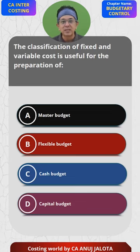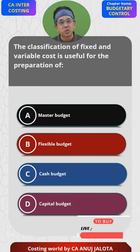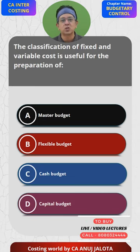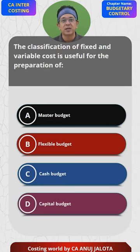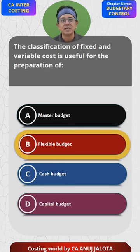The reason being that if the level of activity changes, fixed cost will still remain fixed but variable cost will be changing. So accordingly, B — flexible budget — is the correct answer.